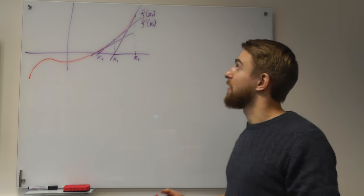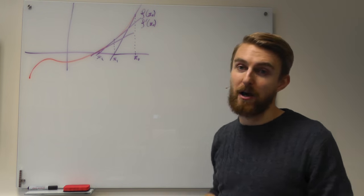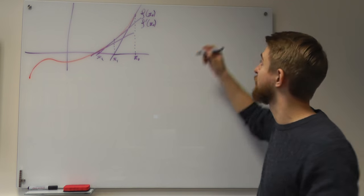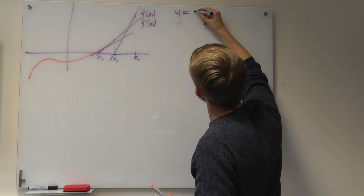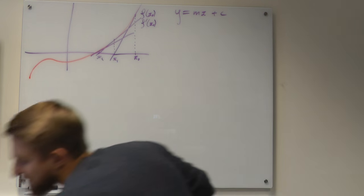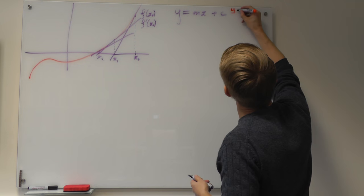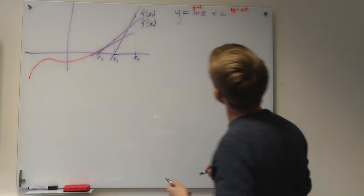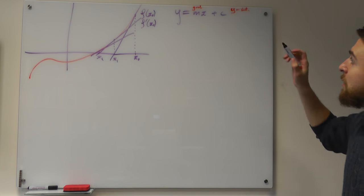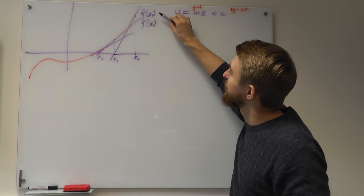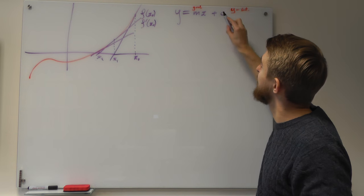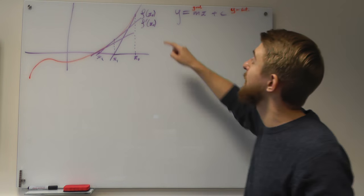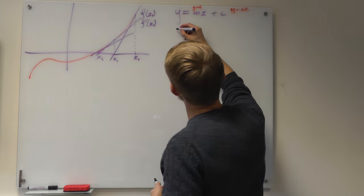What we want to do now is construct the equation for these tangent lines to allow us to iterate. All the tangent lines are straight lines, and all straight lines have an equation of the form y equals mx plus c, where c is the y-intercept and m is the gradient. Using these two pieces of information, we want to find m and c so that we can always construct these lines. m is easy — m is the gradient — and we have the gradient of our function, so we just substitute that one in straight away.